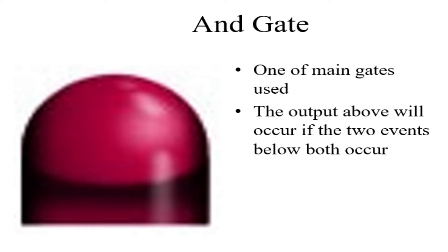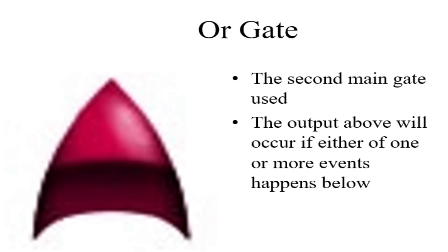The AND gate is one of the main gates used, and its output occurs only if both the events below occur simultaneously. Only then can we term it as an AND gate. The second one is the OR gate, which is the other main gate and has a separate symbol. In an OR gate, the output above will occur only if one of the events is occurring — only then will we say it is an OR gate.